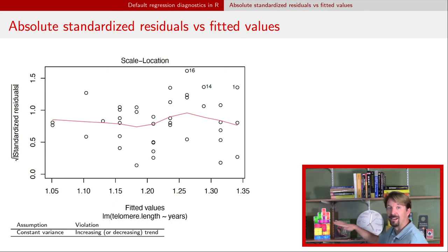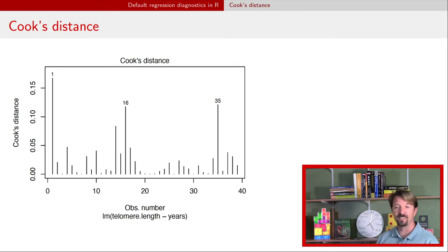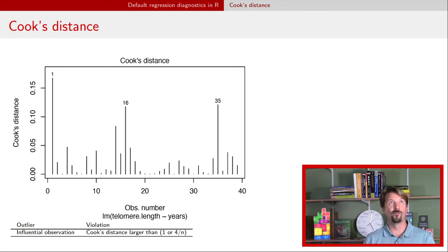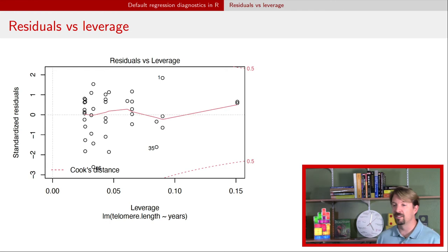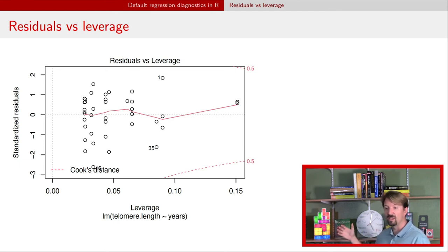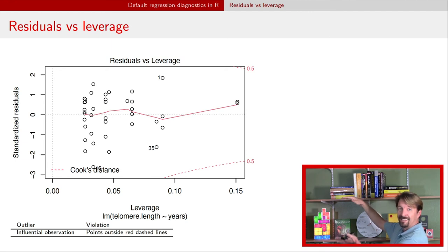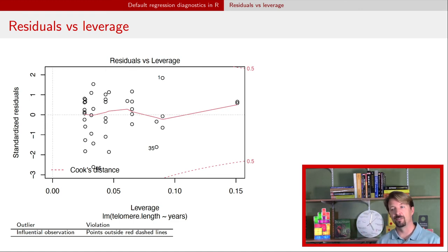If you saw the smoother line going up or down by quite a bit, that would be a cause for concern. The fourth plot is Cook's distance versus the observation number, showing whether any observations have large Cook's distance — using the thresholds of 1 or 4 over the sample size. This example looks totally reasonable. The fifth plot is residuals versus leverage: standardized residuals on the y-axis, leverage on the x-axis. You're looking for points that fall outside the red dashed lines, which would indicate large Cook's distance and potentially influential observations.